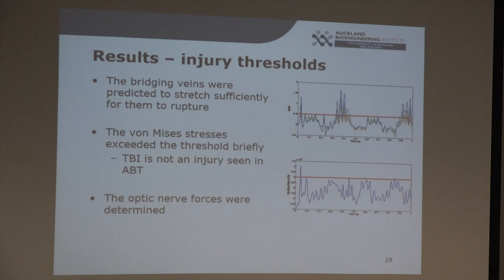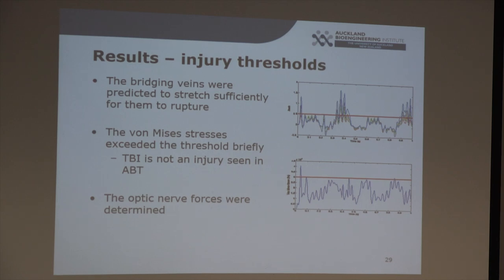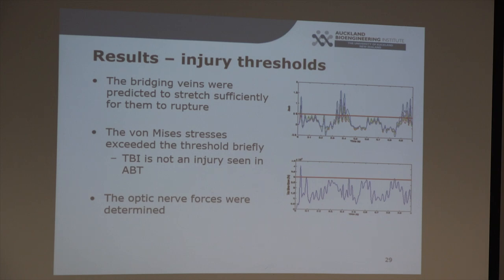I then investigated the strains in the bridging veins and von Mises stresses. Previous literature on bridging vein material properties suggested a maximum strain of 0.5 was needed for rupture. The bridging veins did exceed that injury threshold. For the von Mises stresses, using injury thresholds from literature, the threshold was only exceeded briefly at the very start — which may be a reason why you don't really see traumatic brain injury in many infants with abusive head trauma. There was no data or injury threshold available for the optic nerve forces, so they were just reported.